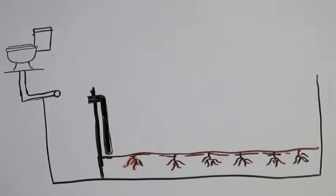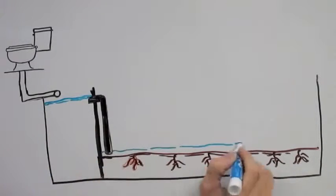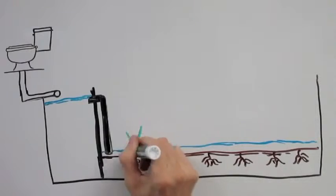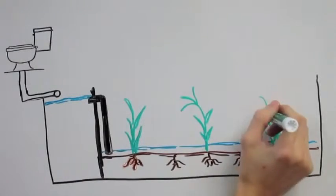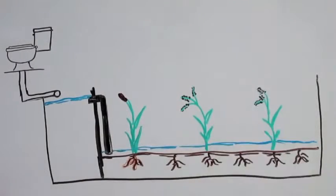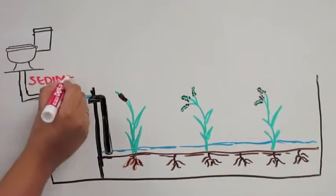A constructed wetland is an engineered ecosystem that supports wildlife while treating anthropogenic discharge such as wastewater. For the sake of educating the woefully ignorant Suzy Q, let's look at the steps of wastewater treatment via constructed wetlands.